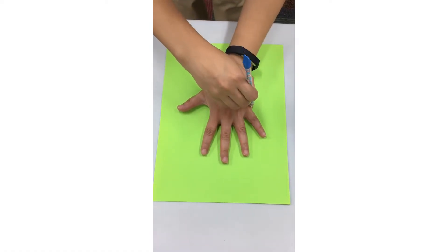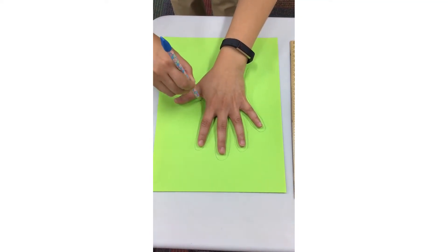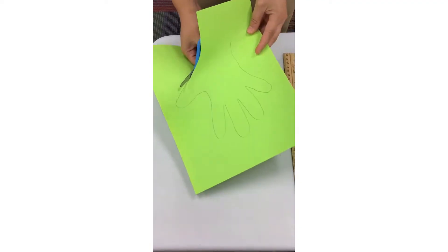The first step is to trace your hand on the paper. Make sure you leave some space around your fingers. Then cut out the hand outline.